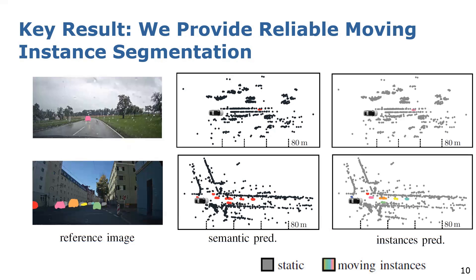Furthermore, our approach performs well under different conditions, as illustrated here with the rainy scene and the more crowded street scene. We reliably detect the different moving instances, as can be seen in the reference image, and also reliably identify the different instances within the scene. The design decisions of our network are backed up by ablation studies, which you will find in the original paper.